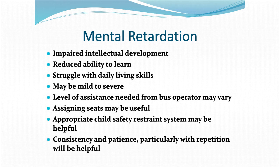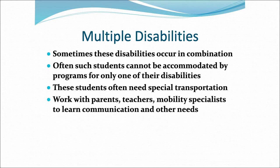With mental retardation, sometimes the obvious is overlooked. For example, putting one student per seat may be helpful. Just be aware of anything that helps in transporting those with these special needs. There is also the category of multiple disabilities, where these conditions may occur in combination in the same student, which can get rather complicated.